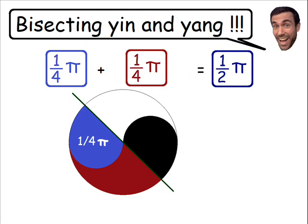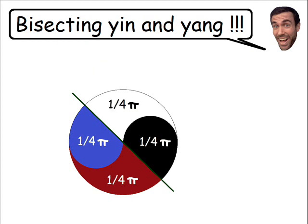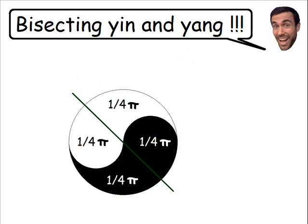So the blue and red areas are both equal to one quarter times pi. Doing the same calculations for the other side of the circle, we conclude that the two areas on the other side are also equal to one quarter times pi. Going back to our original colors, we have proven and successfully bisected both yin and yang.